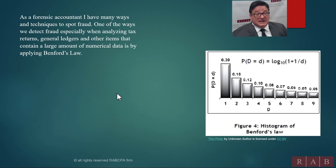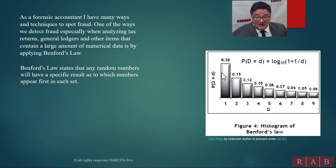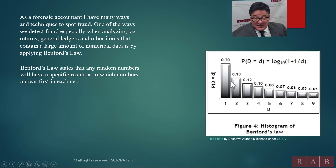As a forensic accountant, we have many ways of spotting fraud, and I love to use Benford's Law. Benford's Law looks at the first digit in numbers. It puts them in order, and when you do that for any population, as long as it's a fair sample, you will get this symmetry and this skew. It's telling you that 30% of the first digits will be a 1, 18% will be a 2, and so on.